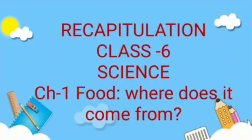The four lessons are chapter 1: Food, Where Does It Come From; chapter 2: Components of Food; chapter 3: Fiber to Fabric; and chapter 13: Fun with Magnets. You have already learned all these chapters, but for your internal assessment revision, I will give you a quick recap one by one for all lessons.